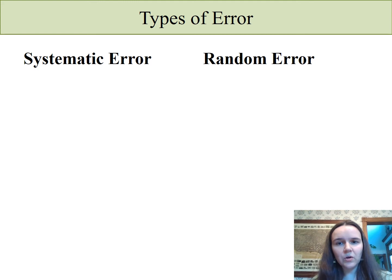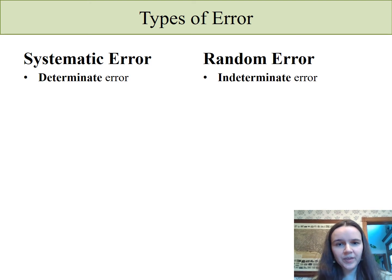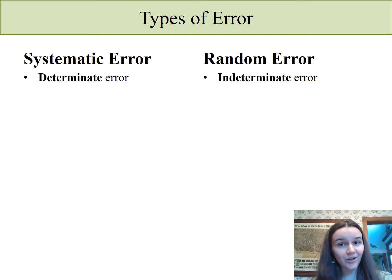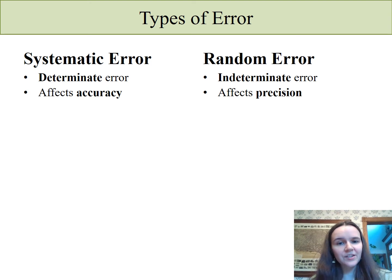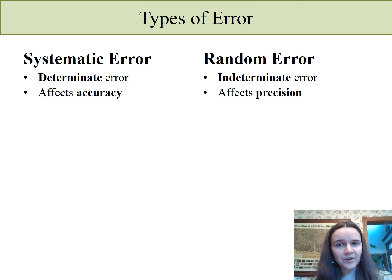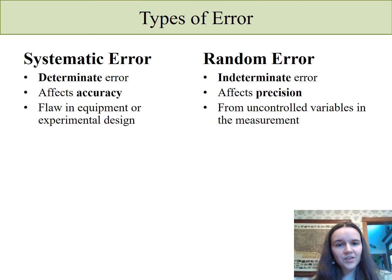So what causes these things? We have two types of error. One is systematic error, one is random error. They have alternative names: determinant is systematic, indeterminate is random. It has to do with whether you can find and determine the cause. Determinate error that has an actual cause systematically is what affects accuracy, whereas random error affects precision. Usually your systematic error comes from some flaw in your equipment or experimental design, and your random error comes from an uncontrolled variable.